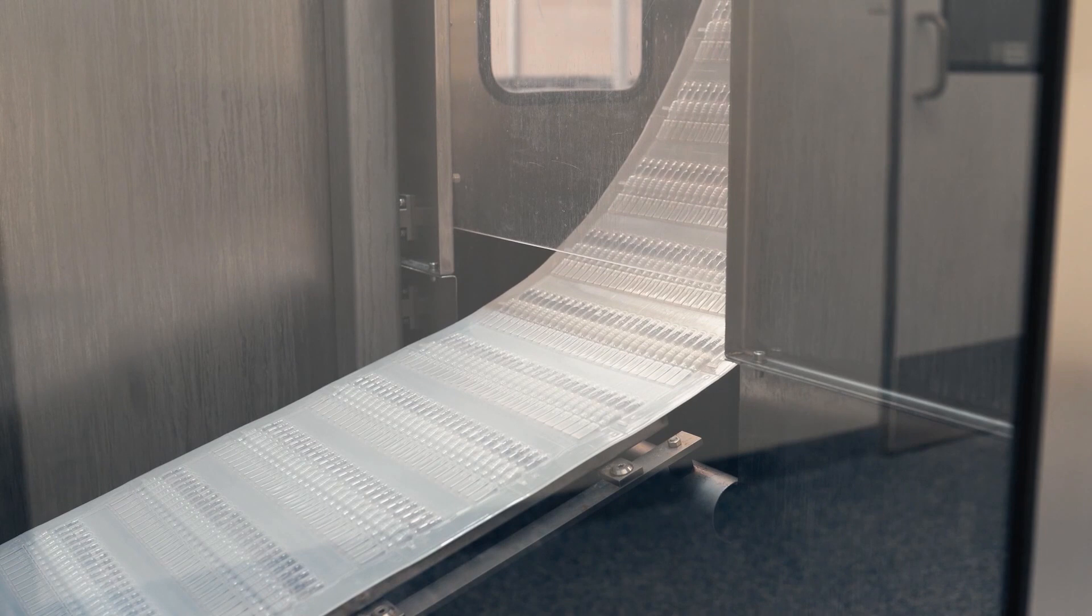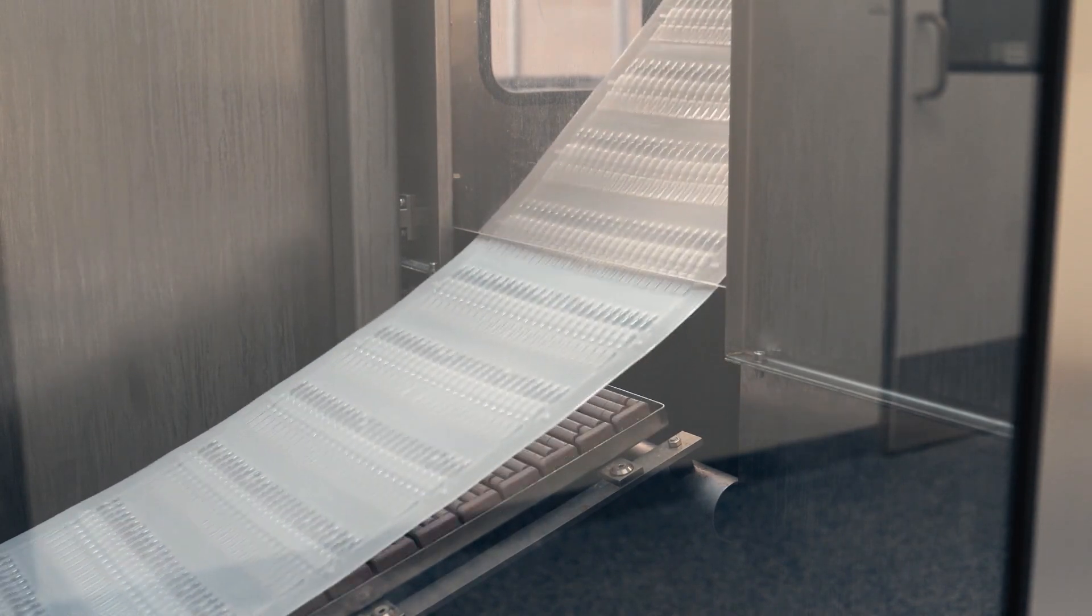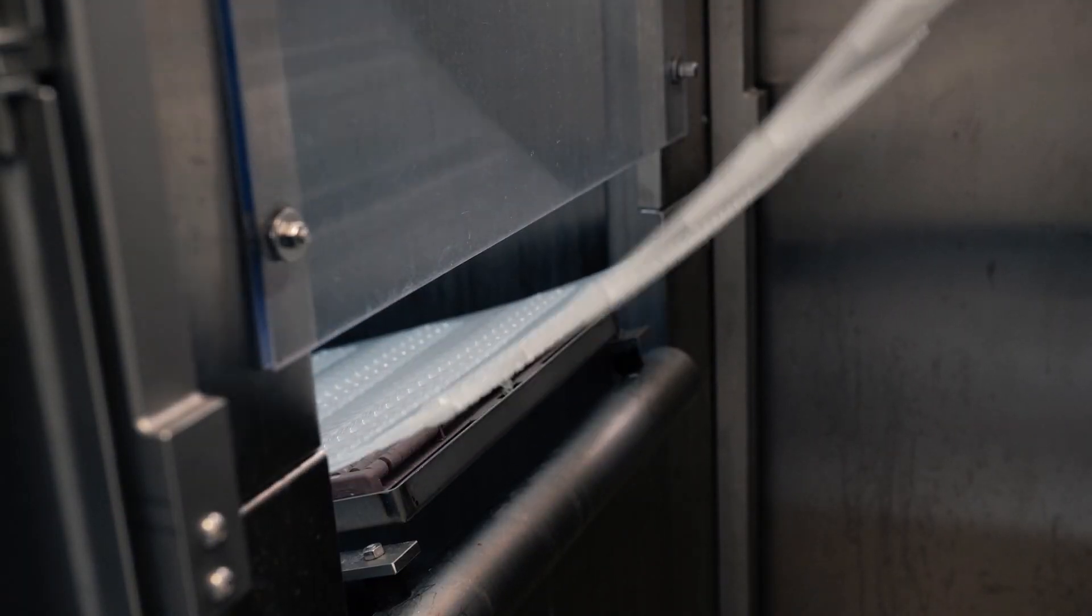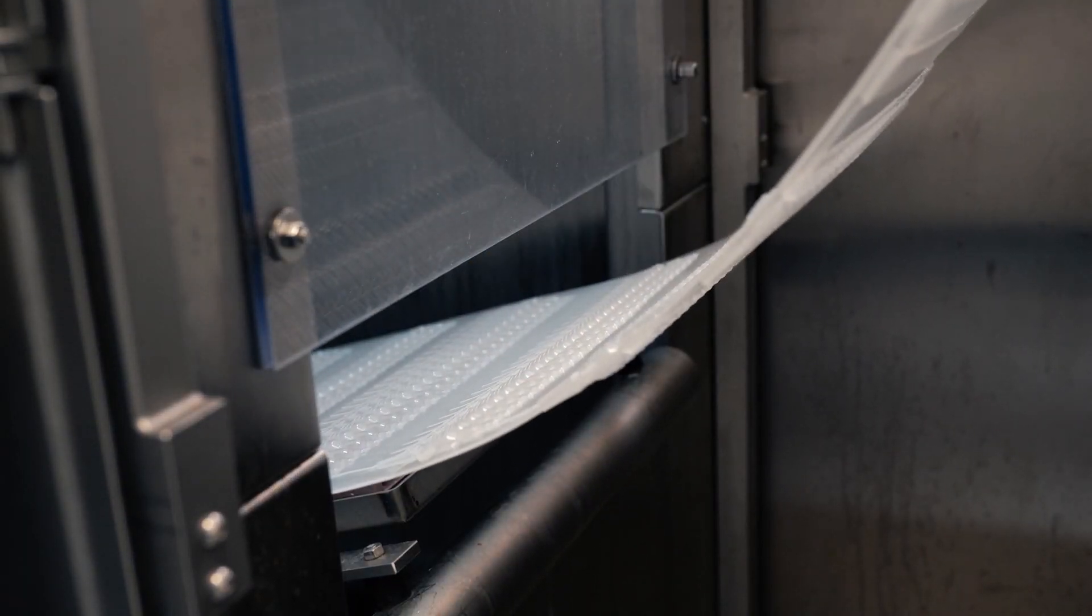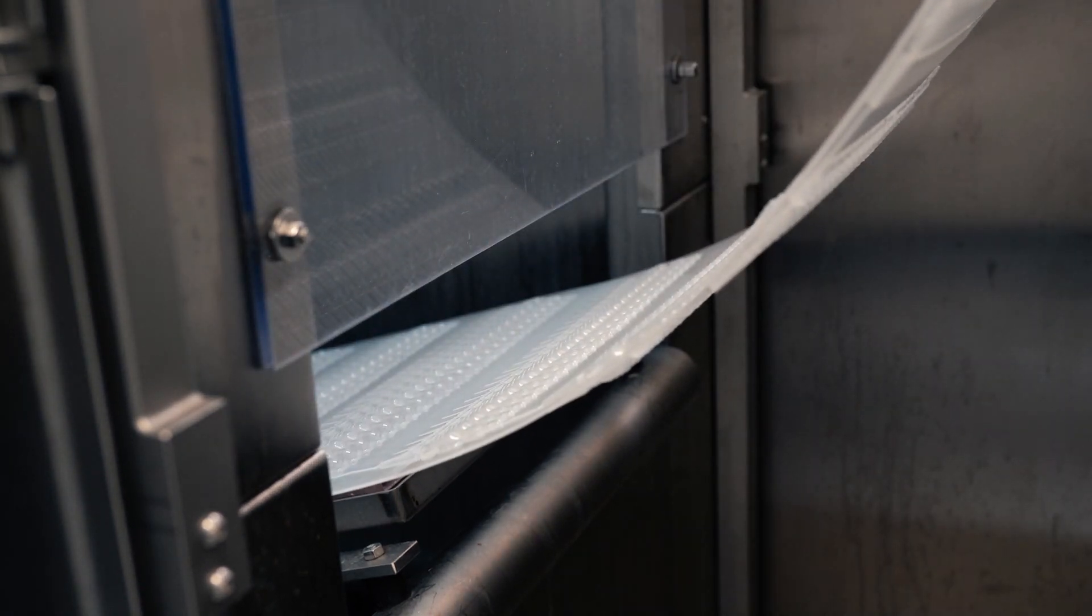The process is then repeated in successive fashion to form a ribbon of container strips exiting the BFS machine. The entire BFS process typically takes anywhere from 3 to 16 seconds per strip, depending on the machine, fill size, and other variables.